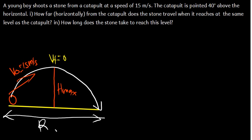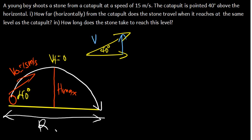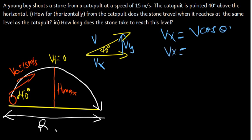The angle is 40 degrees. We have the velocity vector, and we decompose it into Vx and Vy. Using trigonometry (SOH-CAH-TOA): Vx = V cos θ and Vy = V sin θ.